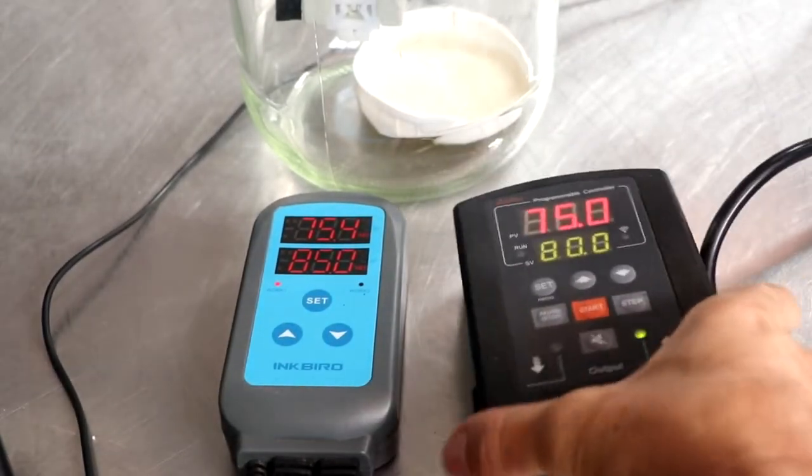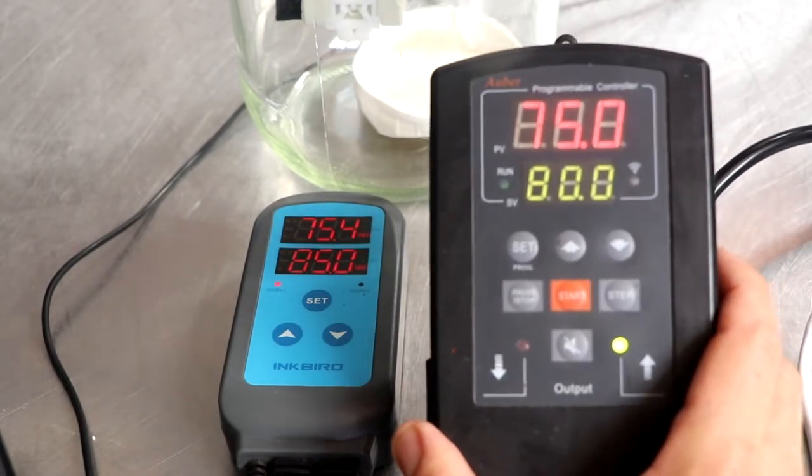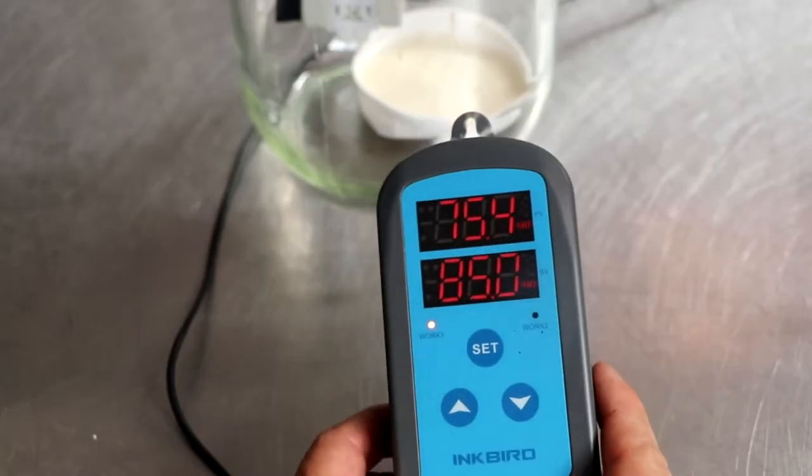So now that's set to 75% humidity, which is what the humidity is inside that jar. So let's go ahead and look at the Inkbird.